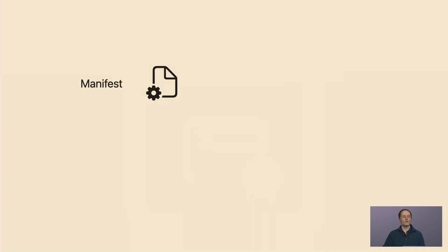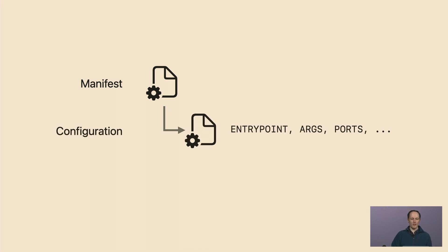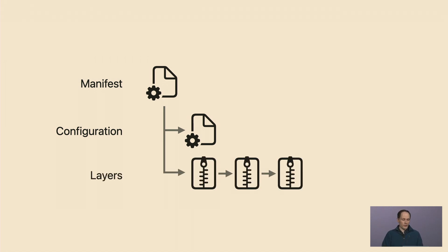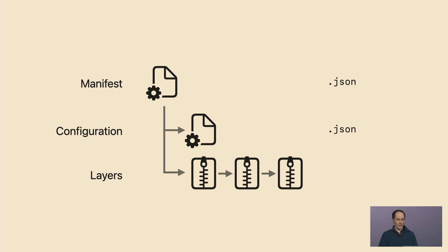So let's take a look inside. Inside the image there's a tree of objects. We start with a manifest, and that points to a configuration object which has stuff like which binary to run when the container starts, what the default arguments ought to be, which network ports to expose. It also points to a list of layers, and these make up the container's file system. They stack up on top of each other — typically your application will be at the top, and then the lower layers provide stuff like libraries and supporting files. All of these metadata objects are JSON, and the layers themselves are tarballs.